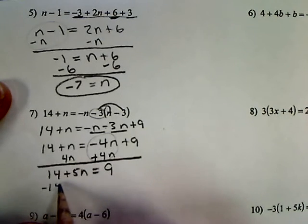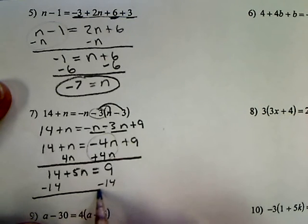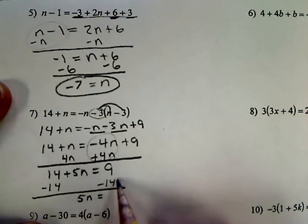Then I will subtract 14, subtract 14. So 5n equals, that gives me a negative 5.